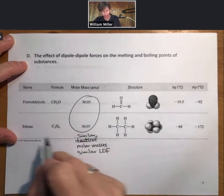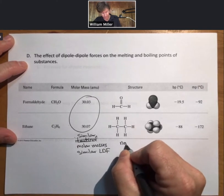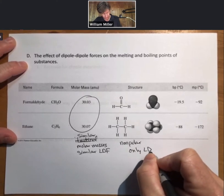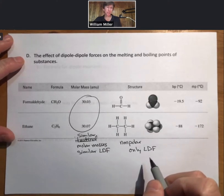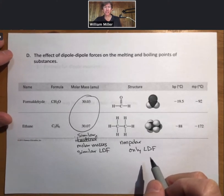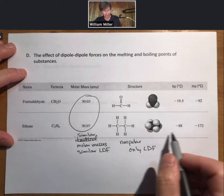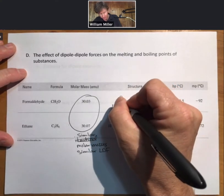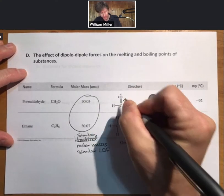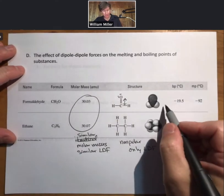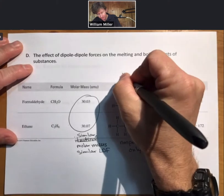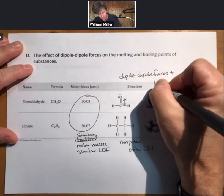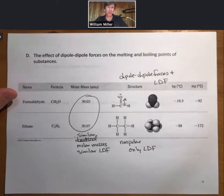Here, for ethane, we have only carbons and hydrogens. This is nonpolar. It has only LDF. And we can see boiling point, which is our primary thing we talk about for trends in LDF is minus 88. Same molar mass here, different structure. We have a dipole here. I'm even going to draw on the electrons. Dipole pointing towards the oxygen. Dipole-dipole forces. Plus LDF. Everything has LDF.